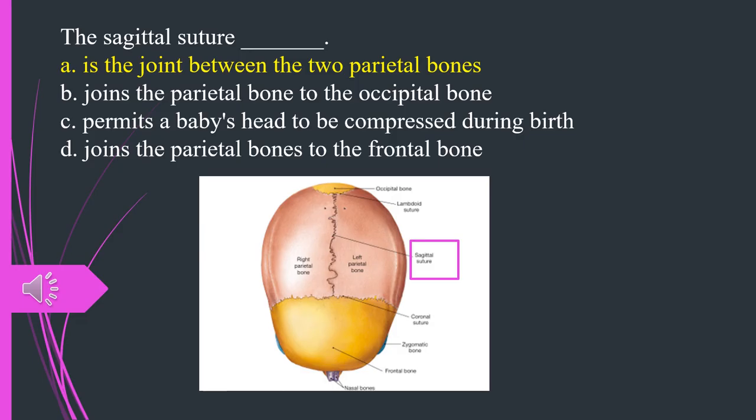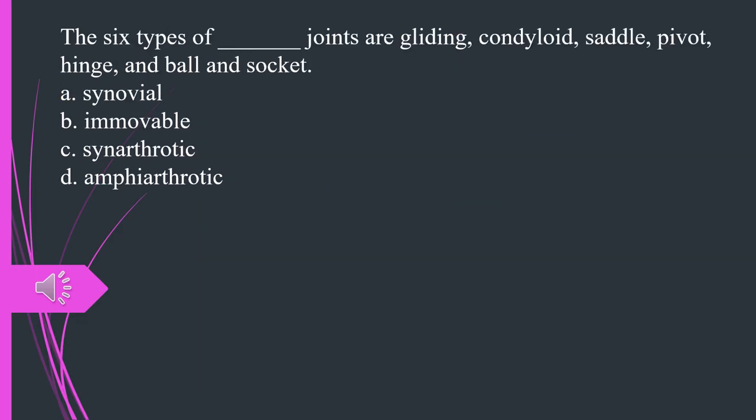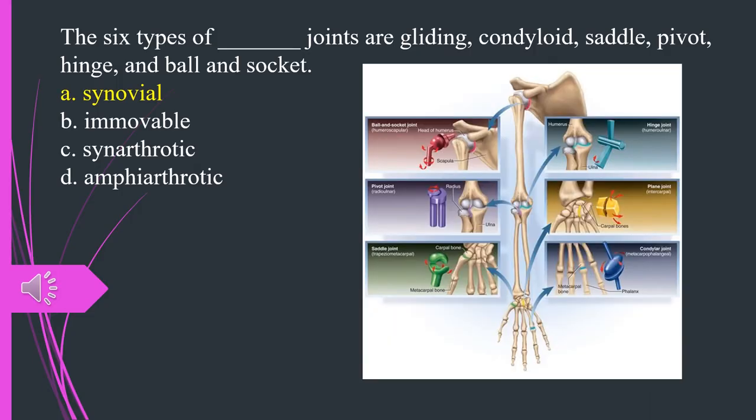The six types of what joints are gliding, condyloid, saddle, pivot, hinge, and ball and socket? A. Synovial. B. Immovable. C. Synarthrotic. D. Amphiarthrotic. The answer is A. Synovial.